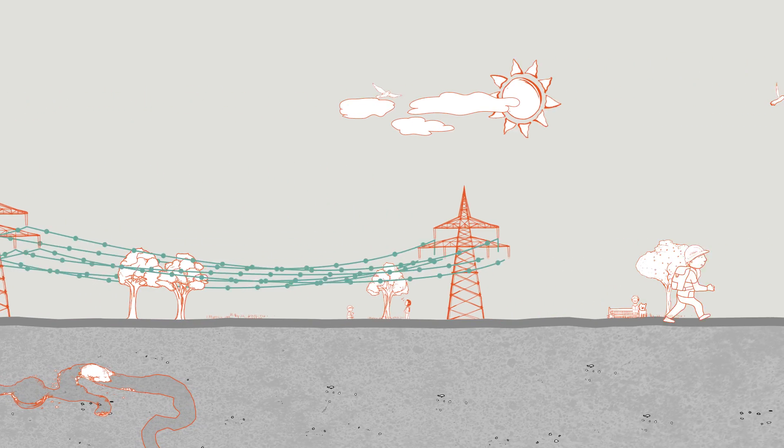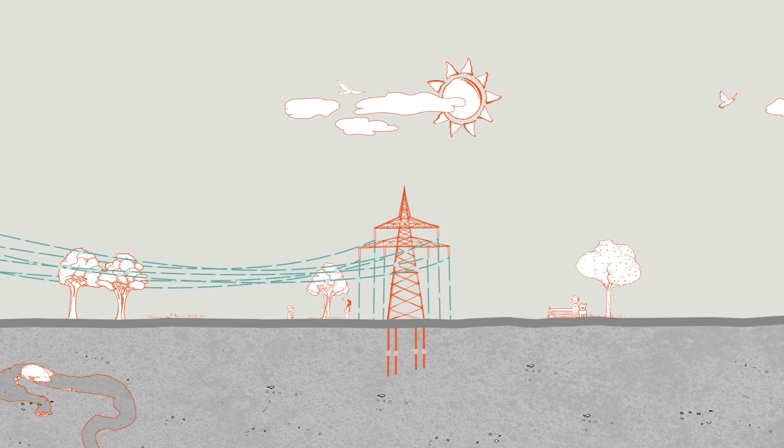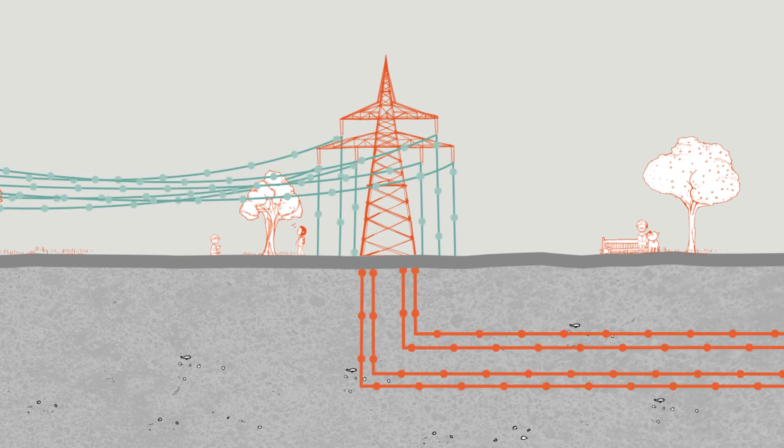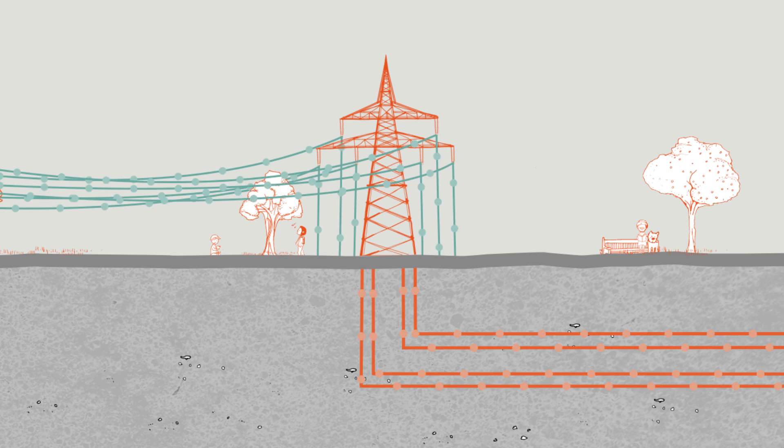Over land, the electricity is almost exclusively transmitted using high-voltage overhead lines and only in special cases via underground cables.